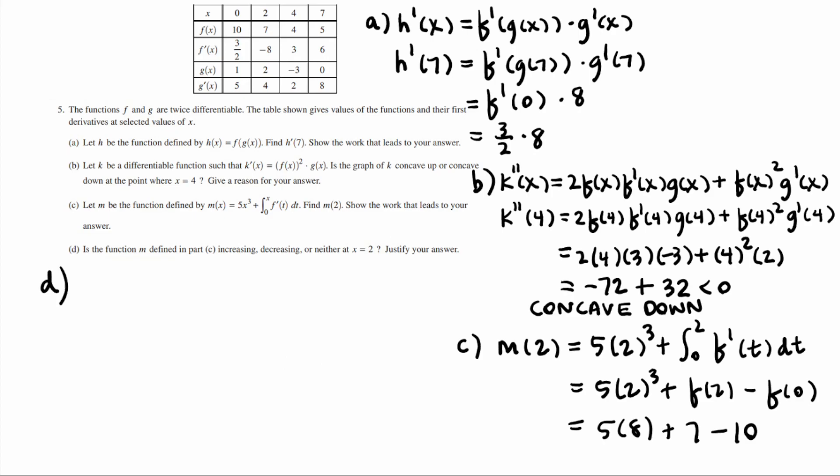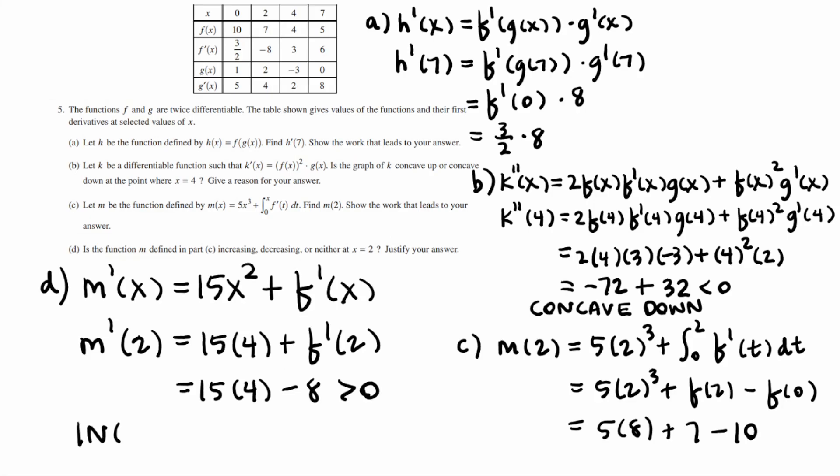So for part d, is m increasing, decreasing, or neither? All right, so we're just going to find m prime of x and plug in 2. m prime of x would be 15x squared plus, and then if I'm taking the derivative of that integral, it's just going to be f prime of x. Let's say 15x squared plus f prime of x. And m prime of 2, which what we're interested in, is 15 times 4 plus f prime of 2, which I mean, can't be that big, right? Negative 8. So 15 times 4 is 60 minus 8 is a positive number, so I'm going to say increasing.